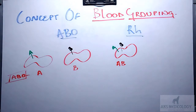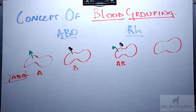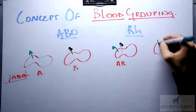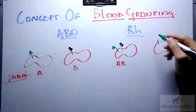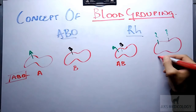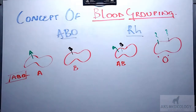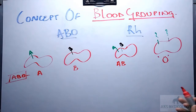There is also a possibility that RBCs lack both antigen A and antigen B. In such instances, the blood group of that individual would be O according to the ABO blood grouping system. O is basically a representation of the numerical 0, which means no antigen, or absence of any antigen.